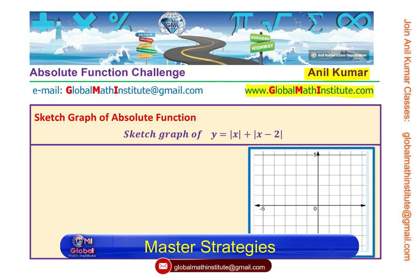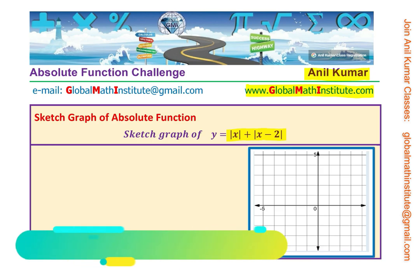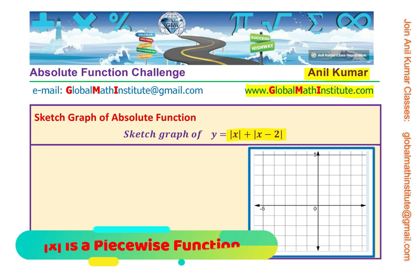We need to sketch the graph of y equals absolute value of x plus absolute value of x minus 2. You can pause the video, answer the question, and then look at my suggestions. To sketch this graph we can follow a couple of strategies. One of them is to rewrite the functions and understand what they are individually. Absolute value of x equals x for x greater than or equal to 0, and equals negative x for x less than 0.